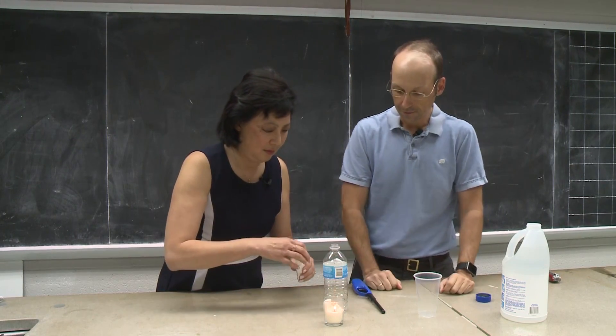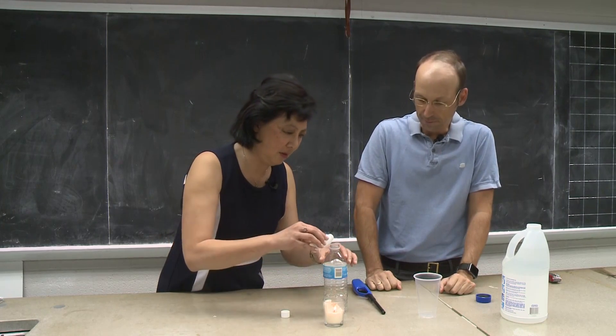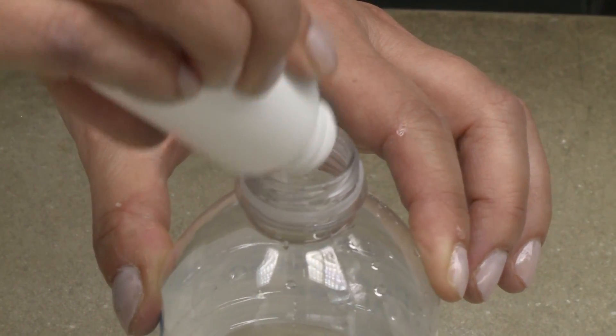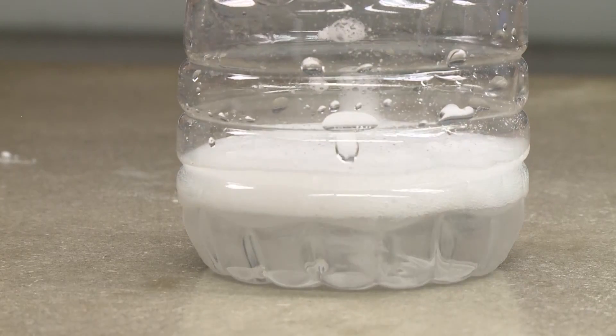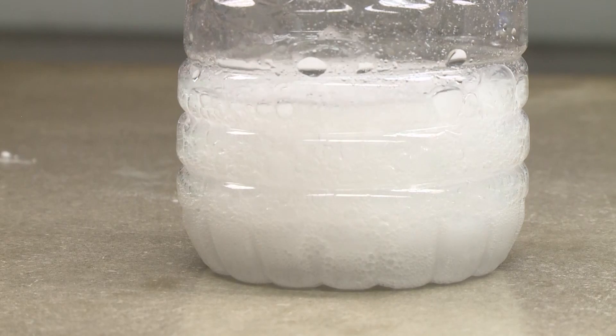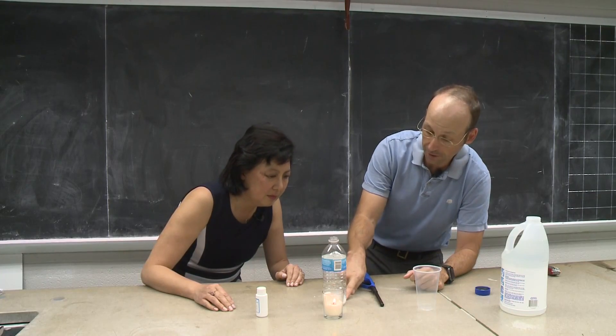Now pour some baking soda in there. How much? It doesn't matter. Just a little bit. As long as it starts fizzing. A little bit more. That's good. So you'll see all the bubbles in there. The baking soda is reacting with the vinegar and it produces carbon dioxide.